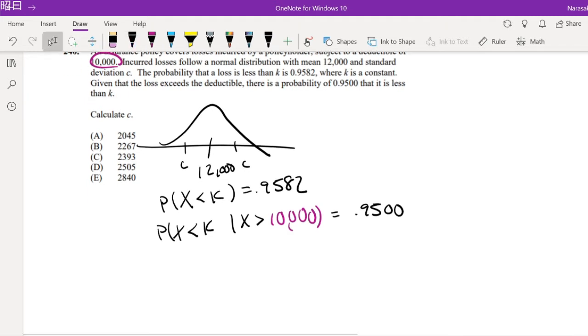Alright, not too bad. So first of all, this is our regular graph, right? But because it's conditional, this is what we're looking for. Let's say this is our deductible $10,000.